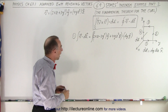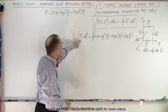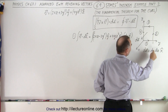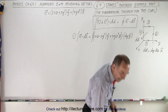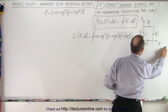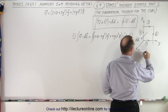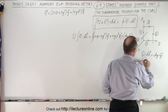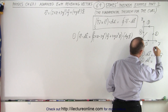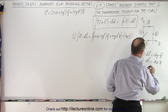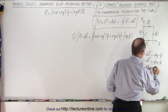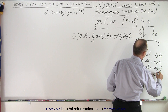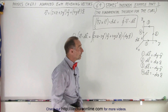There are four separate paths that add up to that closed path. We're going to do the first path: V dot DL. The vector is defined right here, and DL along path number one is going to be the change in the y direction, pointing in the y direction. For path one DL equals DY in the y direction; for path two DL equals DZ in the z direction; for path three DL equals minus DY in the y direction; and for path four DL equals minus DZ in the z direction. Those are the four DLs we need for the four integrals.